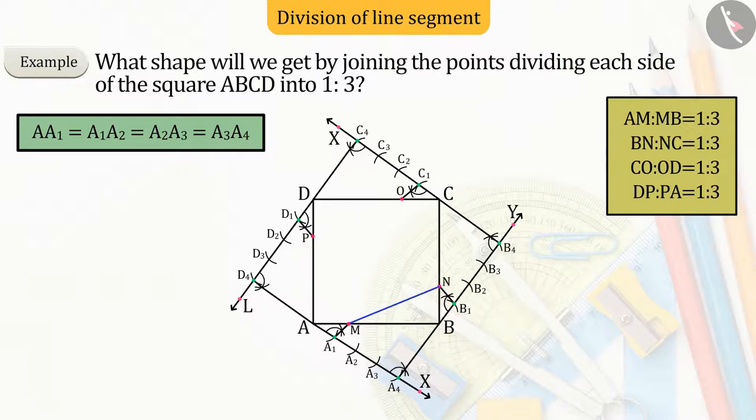Joining points M, N, O, and P, we get quadrilateral MNOP.